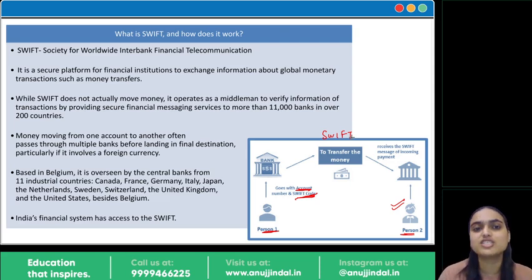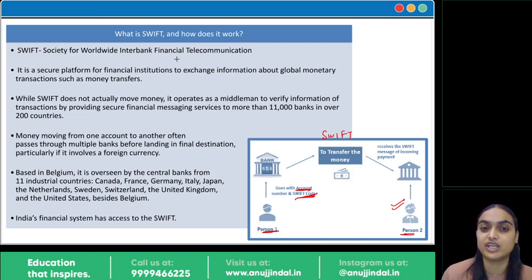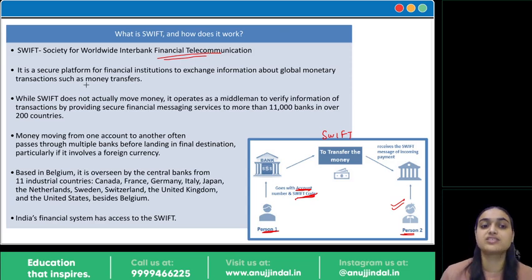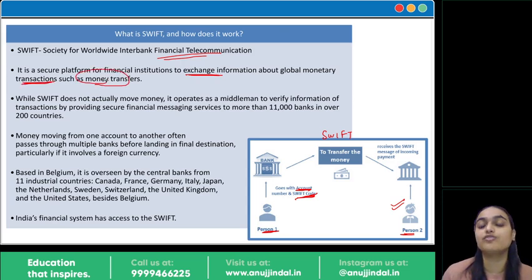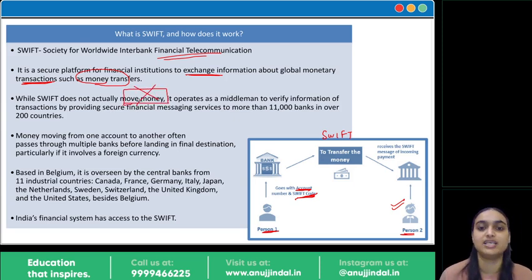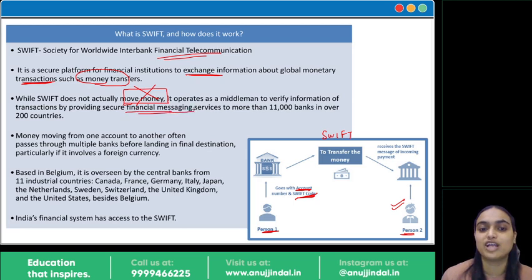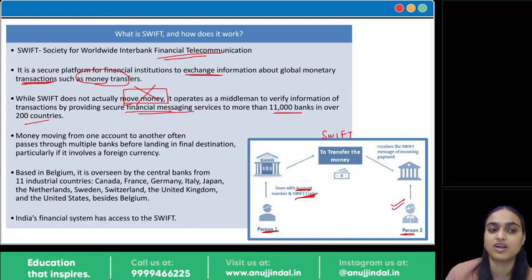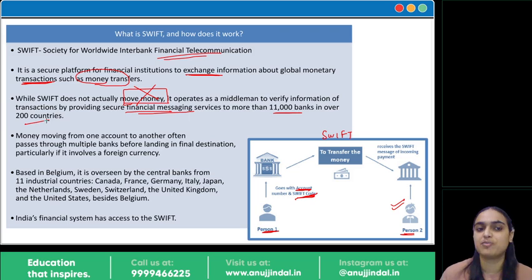This messaging system from one country's bank to another is SWIFT. The full form of SWIFT is Society for Worldwide Interbank Financial Telecommunication. It is a secure platform for financial institutions to exchange information about global monetary transactions. It does not involve movement of money but sends verification messages to facilitate that movement, serving 11,000 banks across 200 countries.